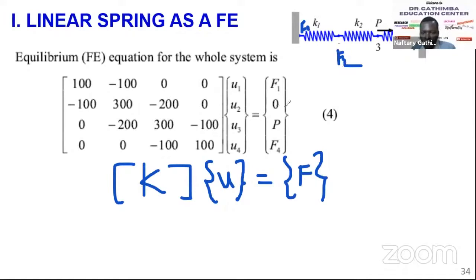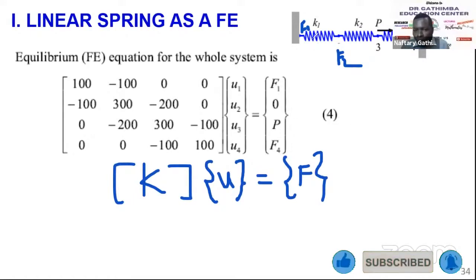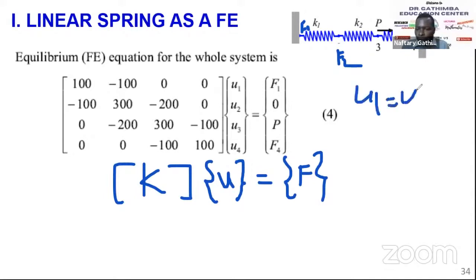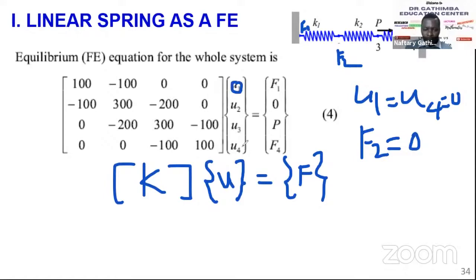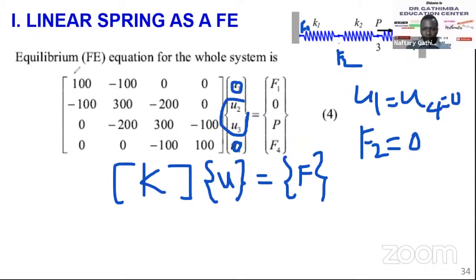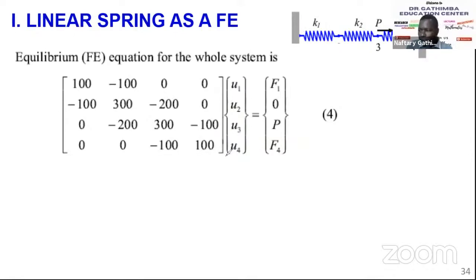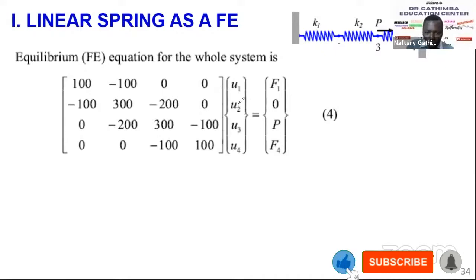There is no force applied at node 2, so F2 = 0. A force P is applied at node 3. Node 1 and node 4 are fixed, so u1 = u4 = 0. These zeros simplify our work considerably. We isolate the non-zero unknowns u2 and u3 by forming the condensed matrix — we cancel the rows and columns corresponding to the zero displacements u1 and u4.